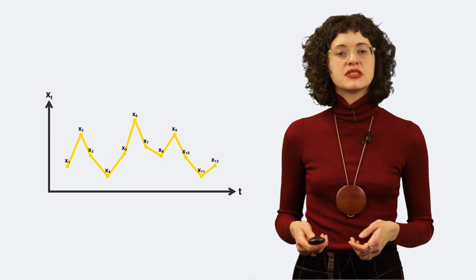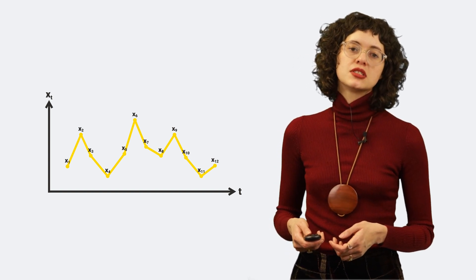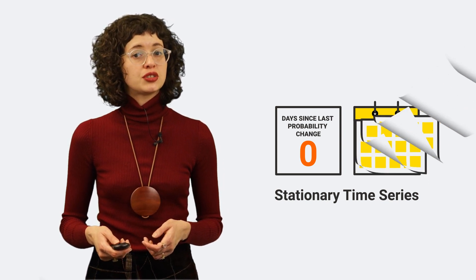By definition, a time series is stationary if the joint probability distribution of all its random variables xt does not change over time.